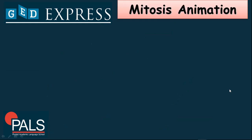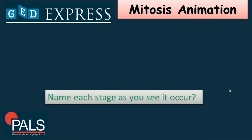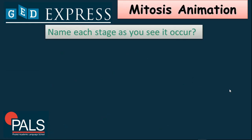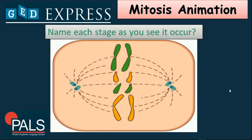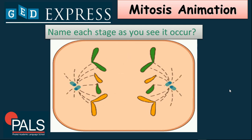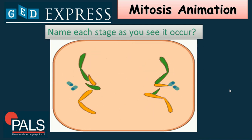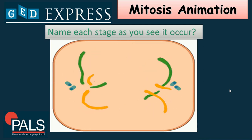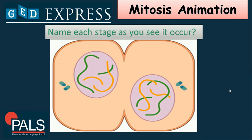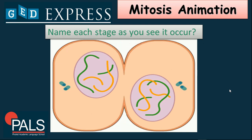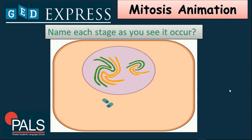Let's try another one. I have here a mitosis animation. Name each stage as you see it occur. Just look at the animation and try to name the stage as you see it occurs. You can play it several times — it's up to you.